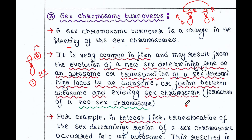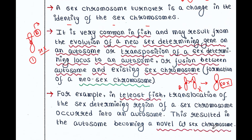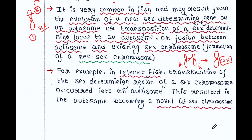Another mechanism is fusion between an autosome and an existing sex chromosome. Suppose an autosome and the X chromosome fuse together; we get a new chromosome called a neo-sex chromosome. This is another way a sex chromosome turnover can occur.